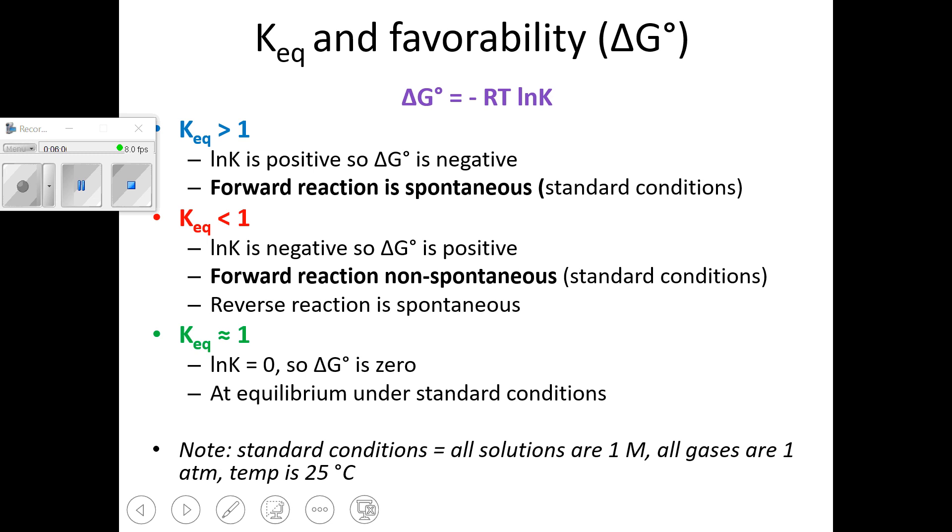Some things you will notice mathematically, when K is greater than one, you end up with a negative delta G. When K is less than one, you end up with a positive delta G. That fits with what we were predicting earlier. So if G is negative, we expect to make a lot of products because it's favorable. So you have a K greater than one. If G is positive, that reaction is not very favorable. So you won't make a lot of products. So your K is going to be less than one.